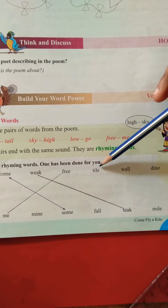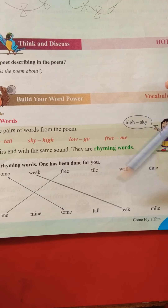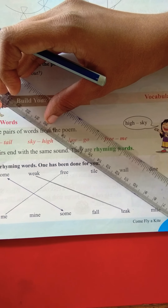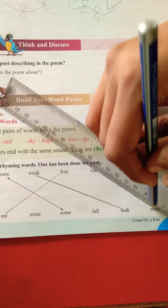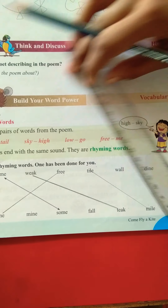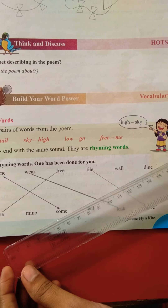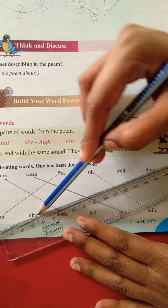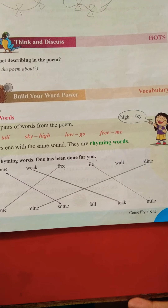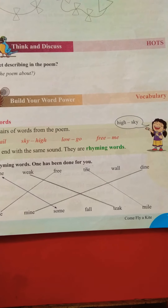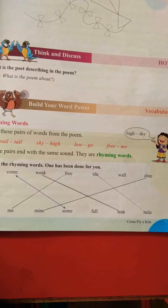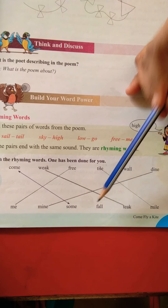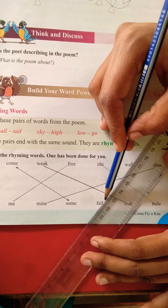Tile — what is the answer of tile? Mile. M-I-L-E. Keep your scale and draw a straight line. Tile-mile. And the last word is dine. D-I-N-E. Answer kya hai dine ka? M-I-N-E — mine. Keep your scale properly and draw a single line. So we missed one — wall. Is there anyone remaining? Yes, fall. Wall-fall. Match it with a single line.